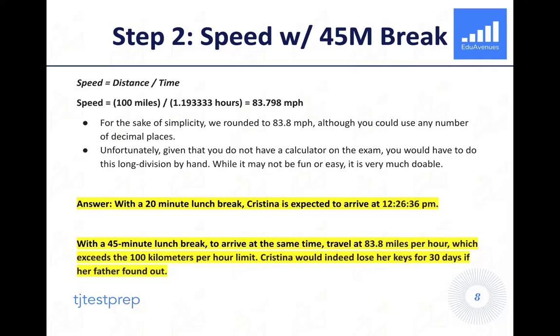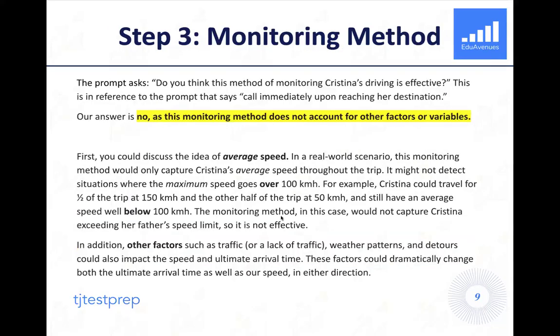Our final answer is that with a 20-minute lunch break, Christina is expected to arrive at 12 hours, 26 minutes, and 36 seconds p.m. And with a 45-minute lunch break, to arrive at this exact same time, she would need to be traveling at 83.8 miles per hour. If we were to convert this to kilometers per hour, that would far exceed our 100 kilometers per hour limit. So Christina would probably lose her keys for 30 days if her father found out that she did take the 45-minute lunch break instead. That concludes our second step.